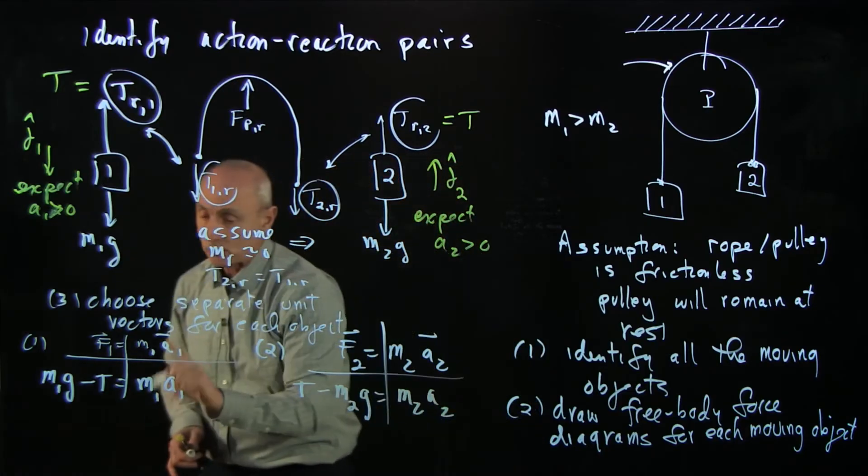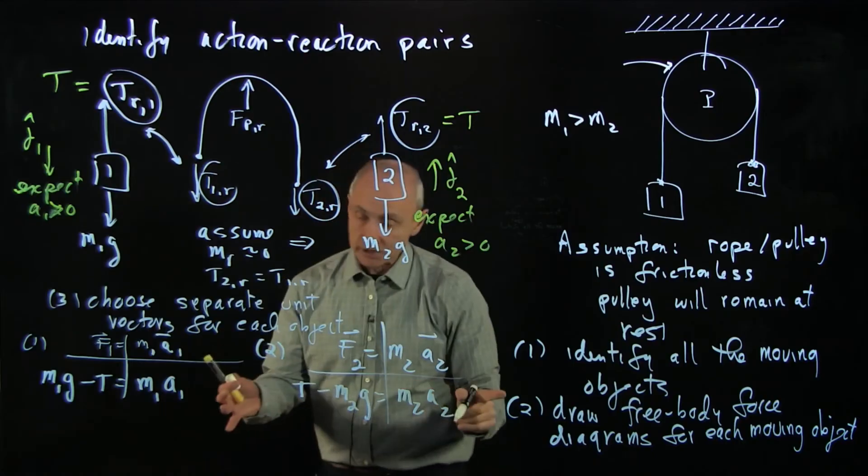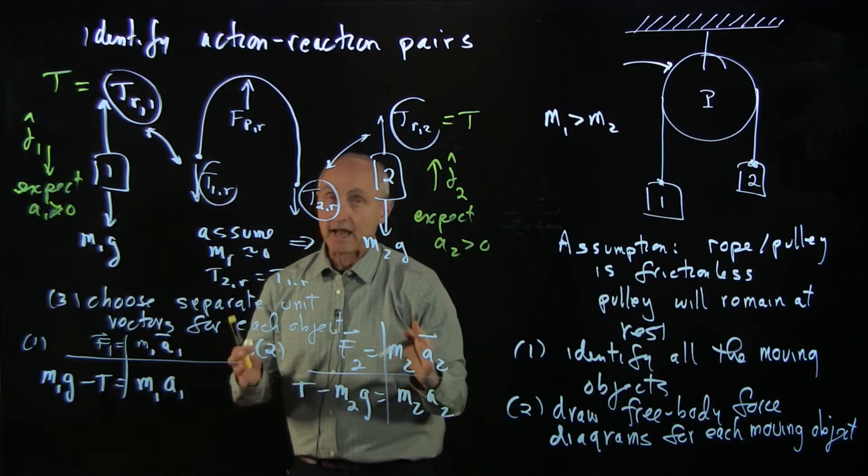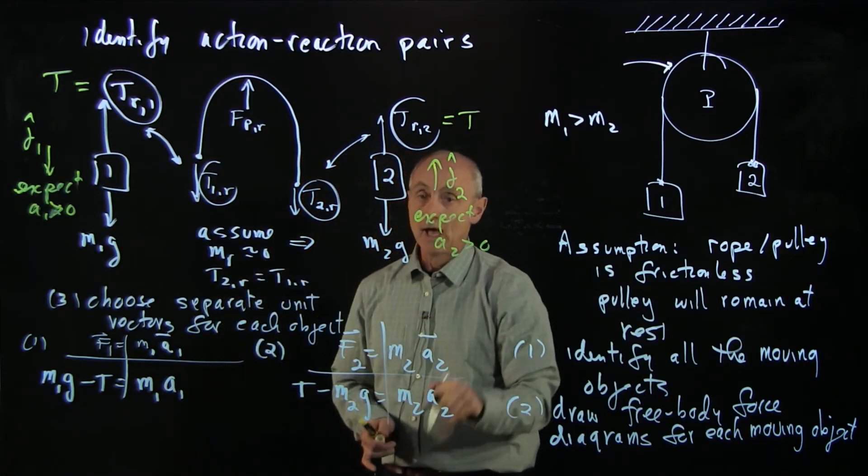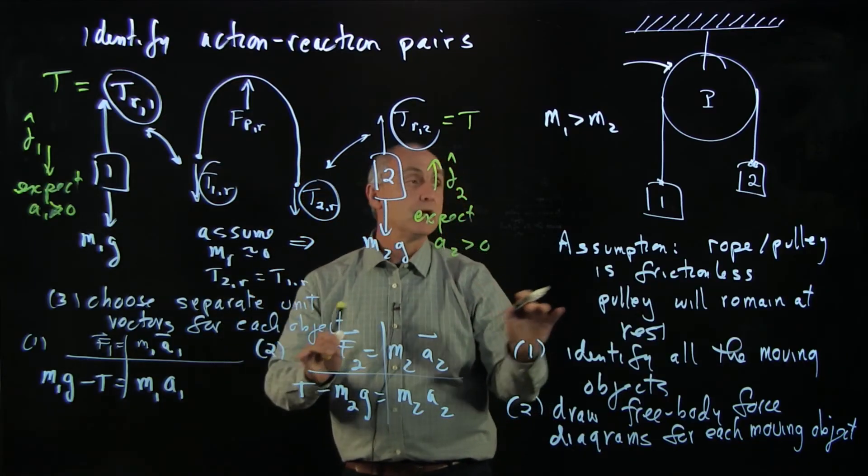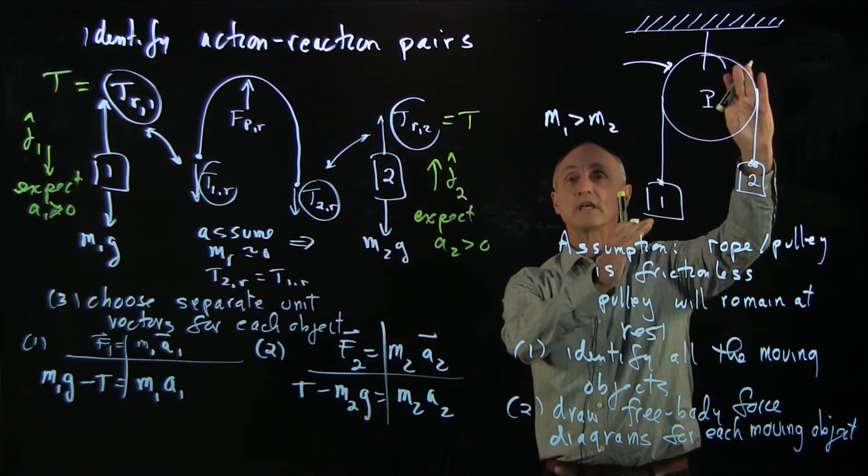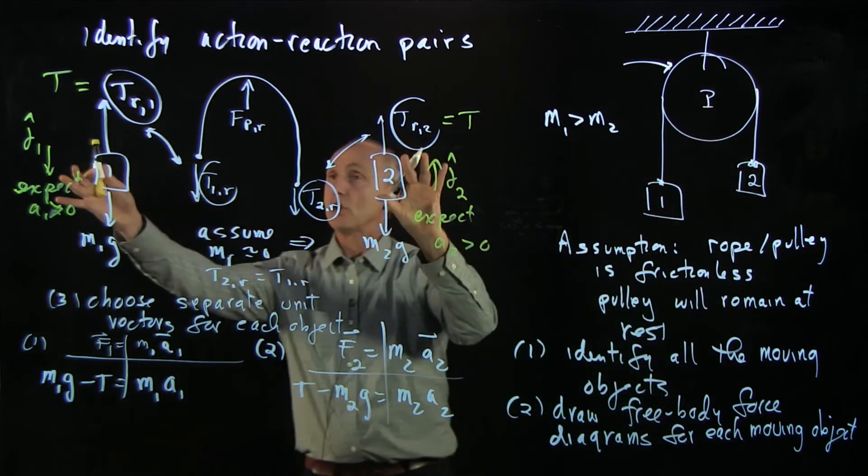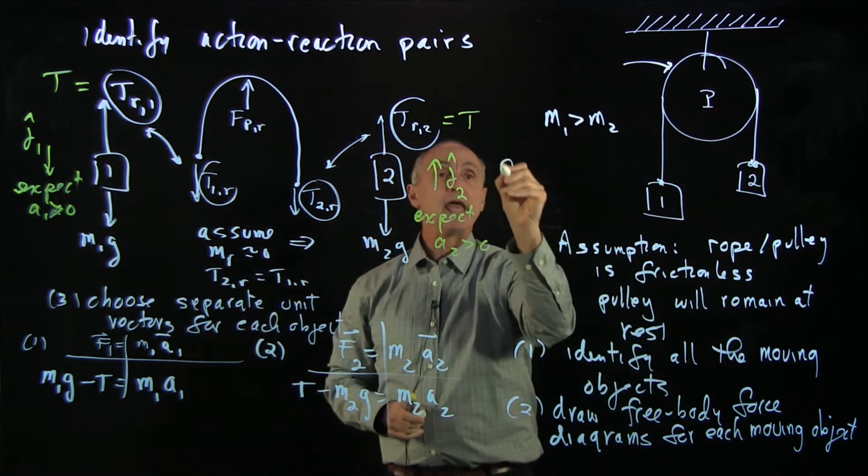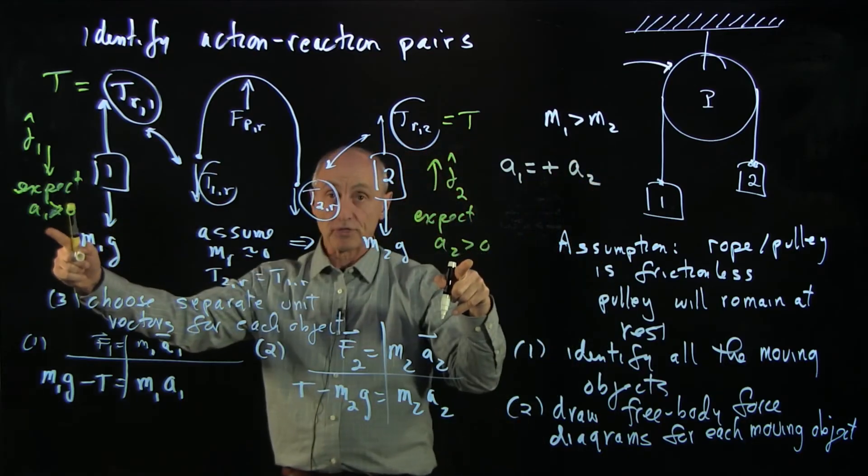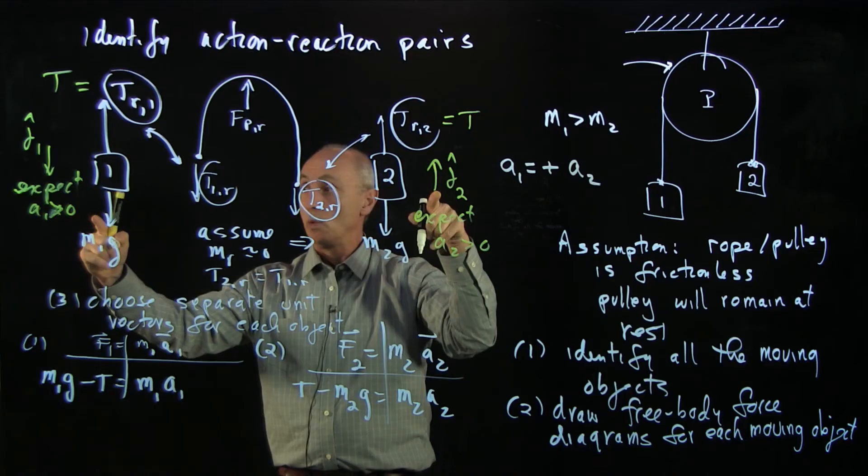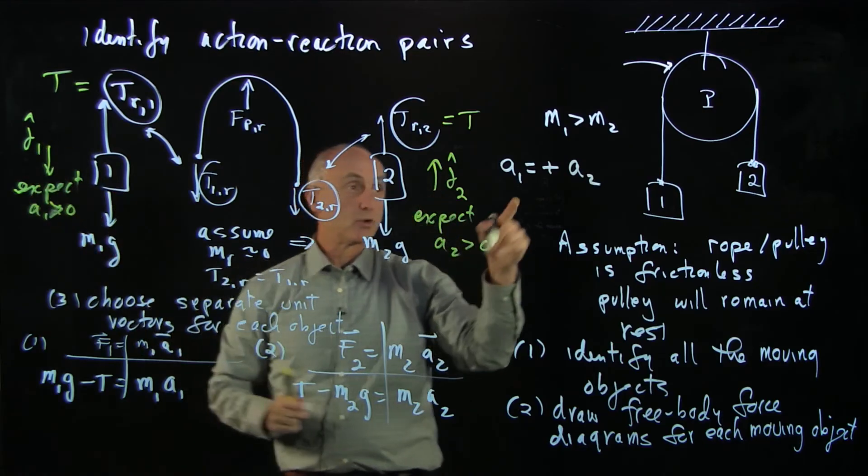I now have two equations. But when I look at these equations, I see that I have three unknowns: t, a1, and a2. But I have a constraint. Because these objects are moving together, and the way I've chosen the coordinate systems, a1 is equal to plus a2, both are positive with respect to my choice of coordinate systems.